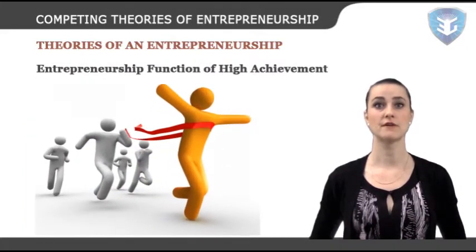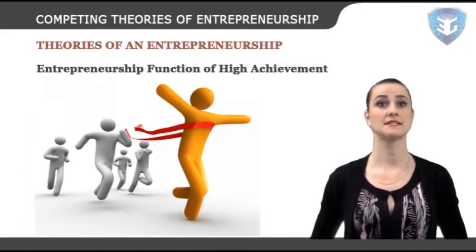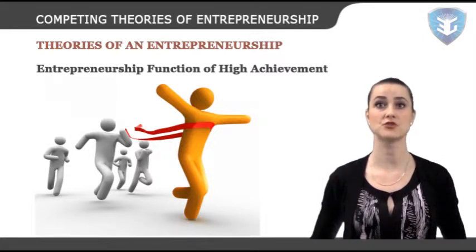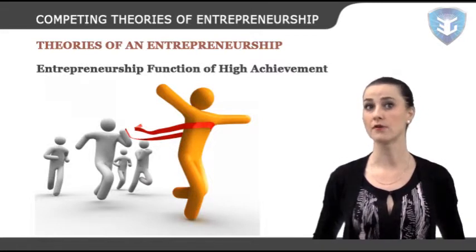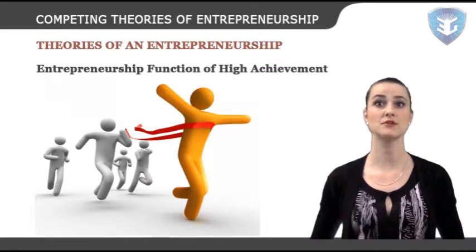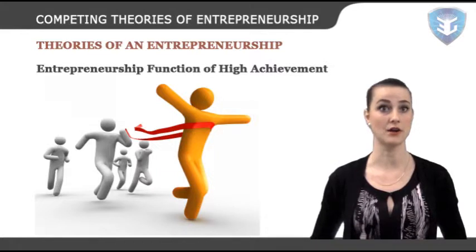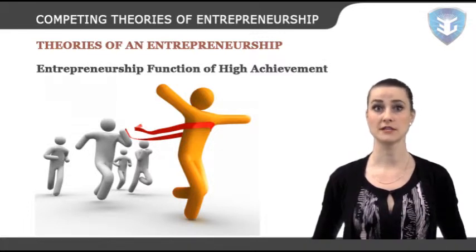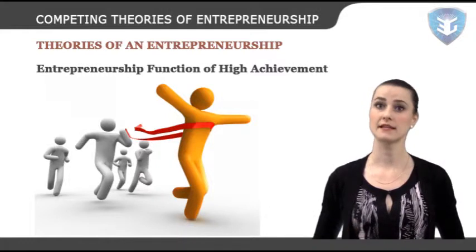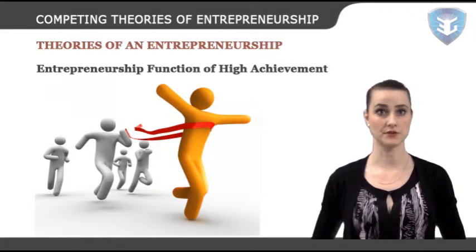Entrepreneurship: Function of High Achievement. McClelland states that a businessman who simply behaves in traditional ways is not an entrepreneur. Moreover, entrepreneurial role appears to call for decision-making under uncertainty. McClelland identified two characteristics of entrepreneurship: firstly, doing things in a new and better way, and secondly, decision-making under uncertainty.